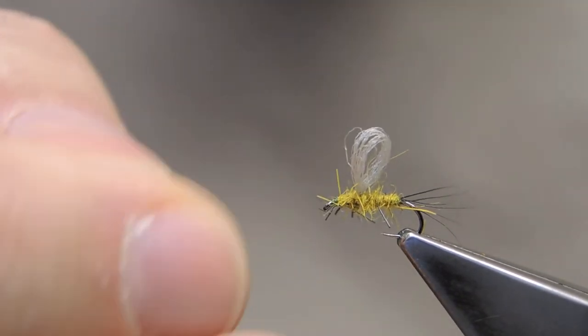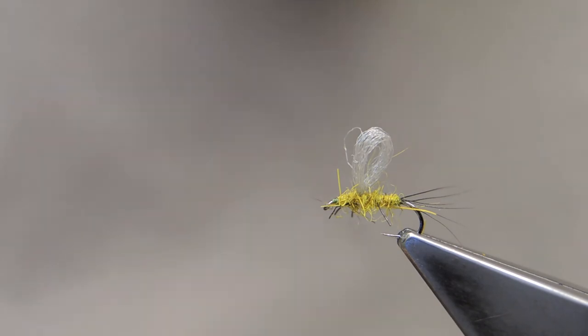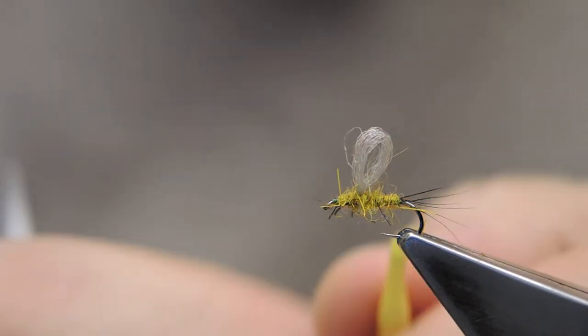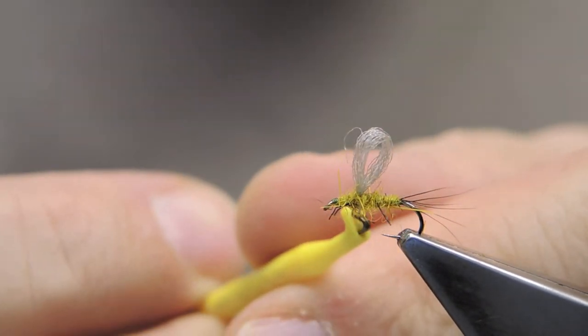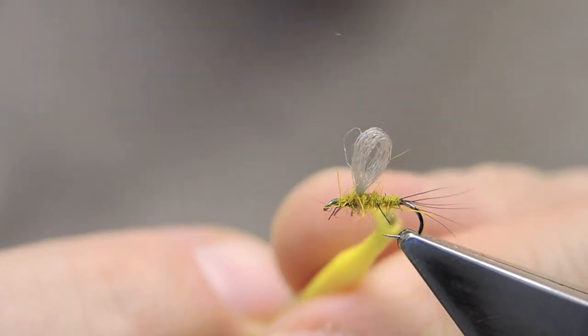You're now left with six spindly legs on either side.